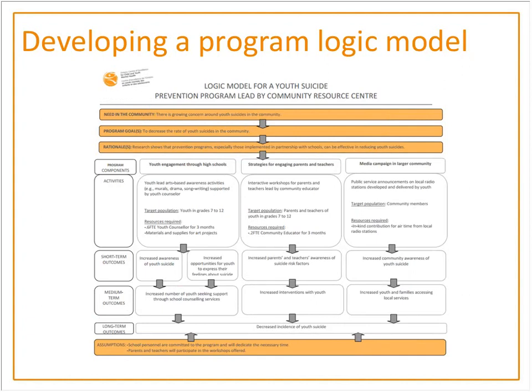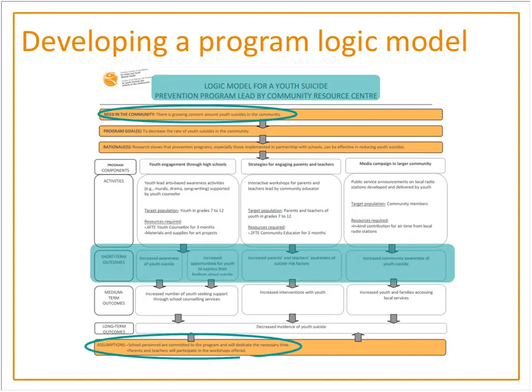In addition to the blank template, we've also appended in the toolkit an example of a completed program logic model using a fictitious program we made up — a youth suicide prevention program. This example illustrates the pieces we discussed: an articulated need in the community, related program goals, rationale with supporting evidence, activities grouped into three components, and short, medium, and longer term outcomes that have been identified. All of this can be found in the Program Evaluation Toolkit.